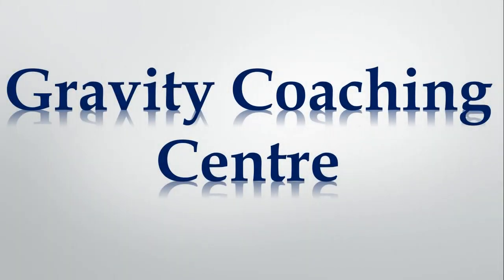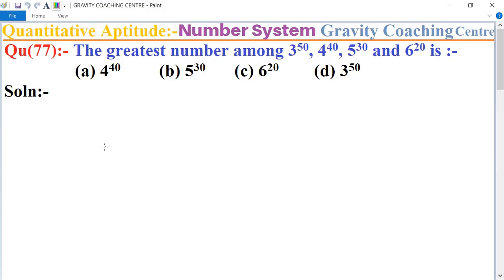Welcome to our channel Gravity Coaching Centre. Quantitative Aptitude, chapter Number System, question number 77: The greatest number among 3 to the power 50, 4 to the power 40, 5 to the power 30, and 6 to the power 20 is?